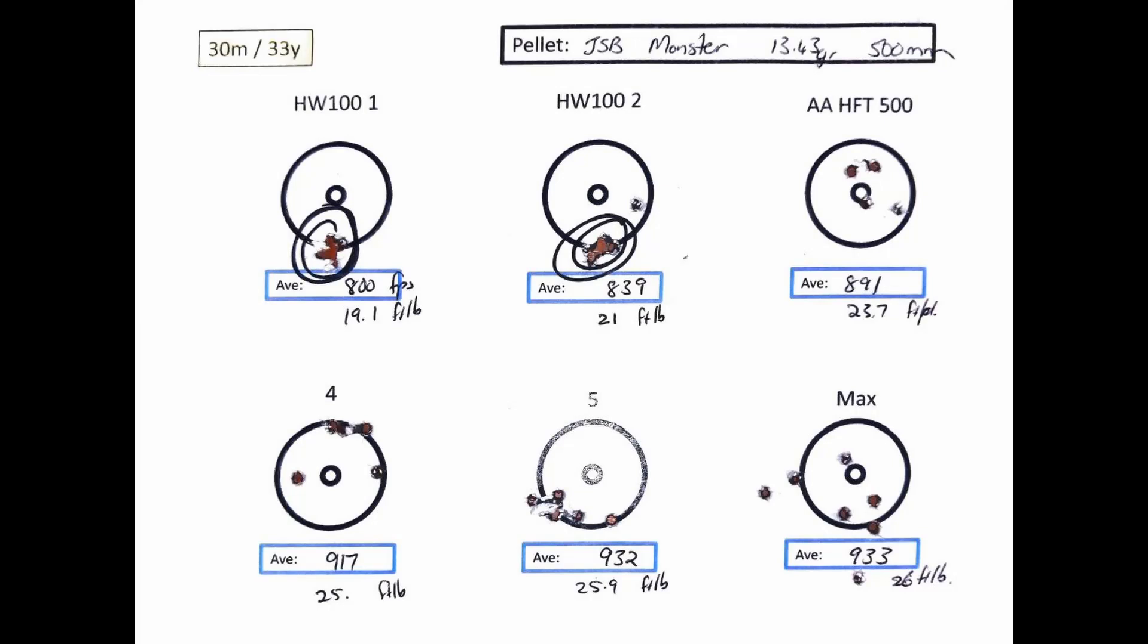The Monster Redesigns grouped exceptionally at 800 feet per second, which is quite slow at only 19.1 foot-pound. But that was quite weird—these guys are supposed to be there for the FAC guns or the high power guns. And I also saw an excellent grouping at 839 feet per second. But the moment I pushed it beyond these limits, it started opening, and then from there on, nothing to smell or sneeze about.